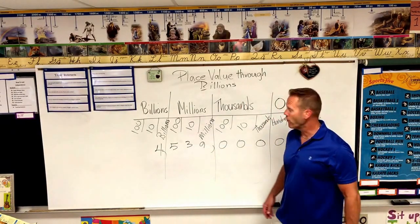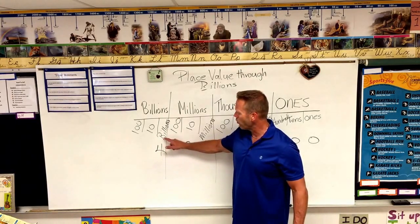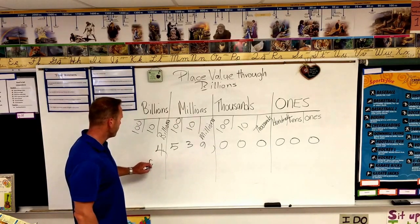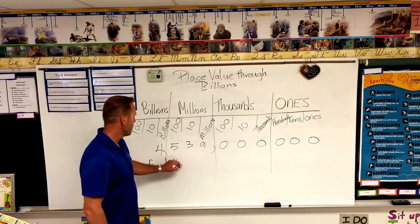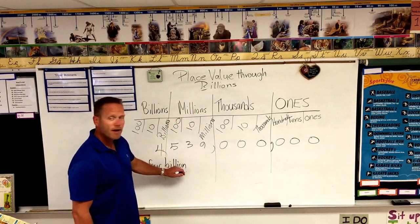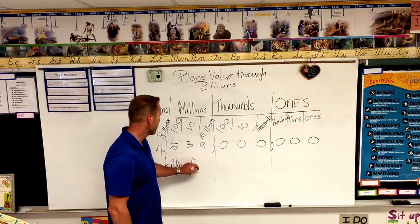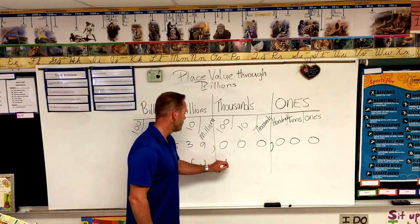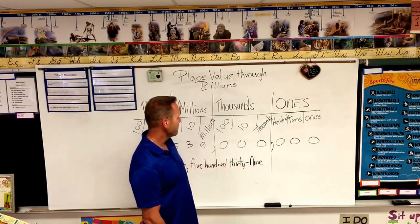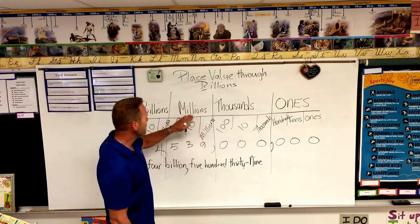So how do we know how to say that if we were going to write that in word form? You'd take the number and say the word for whatever place value that falls under. So if we're going to write this out in word form, we would write four billion — each place value is separated by a comma — so we have four billion, then we'd say the next grouping, which is five hundred thirty-nine. Thirty-nine is a hyphenated number because it is two words that make up that number; any time you have two words that make up a number, you have to put a hyphen in the middle. Five hundred thirty-nine — this group falls under the millions, so we then write millions.